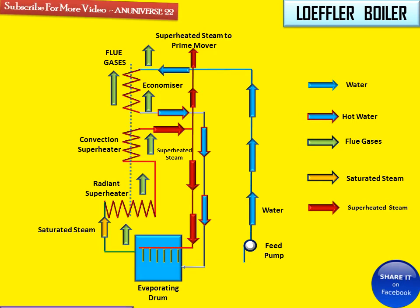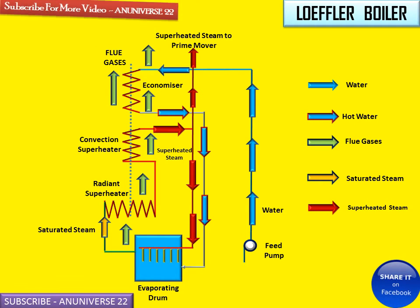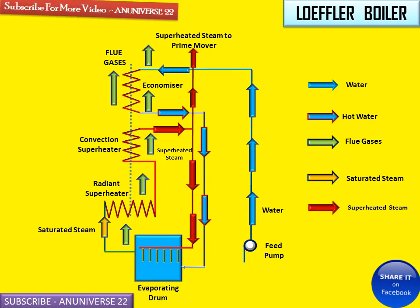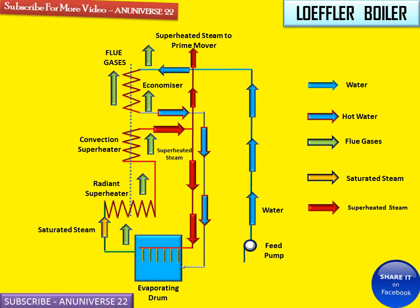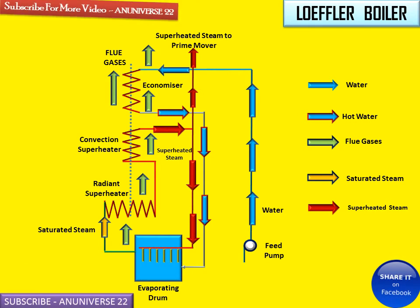This is the path of the flue gases. The radiant superheater, convection superheater, and economizer are all arranged in the path of the flue gases.